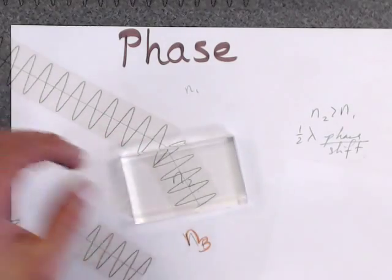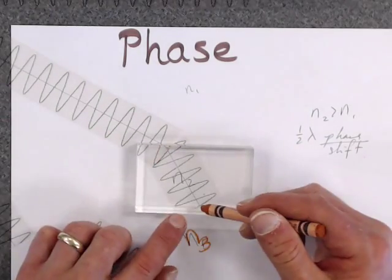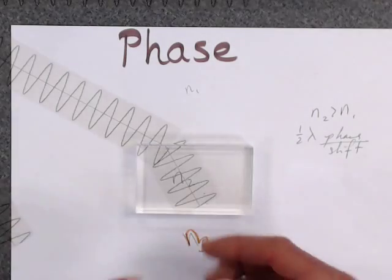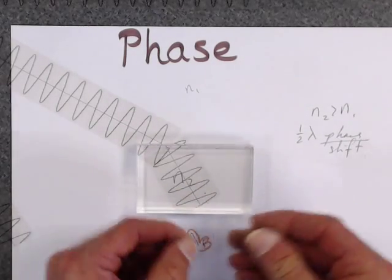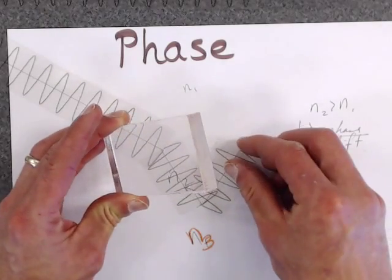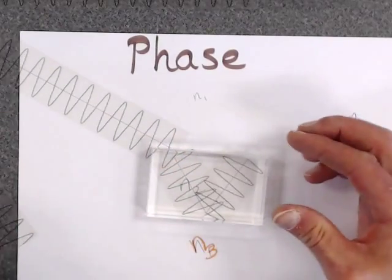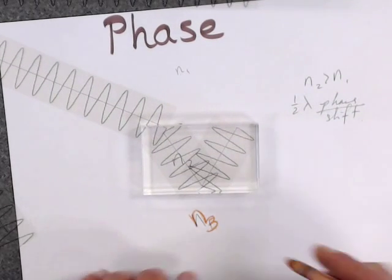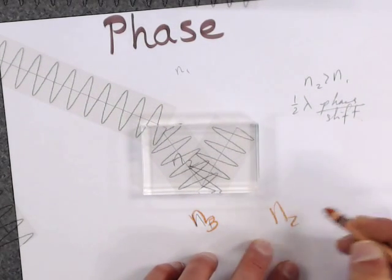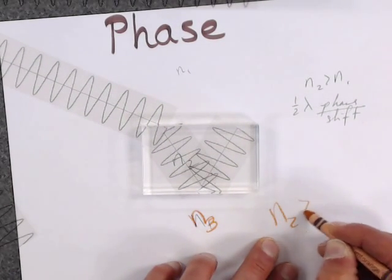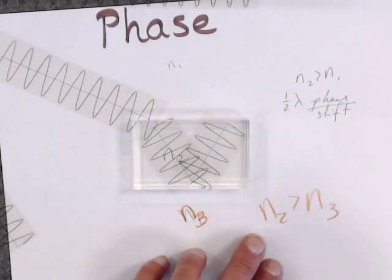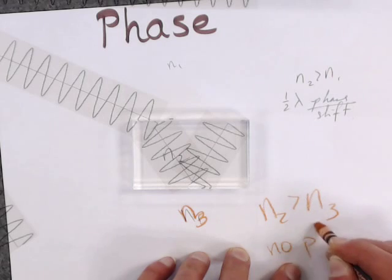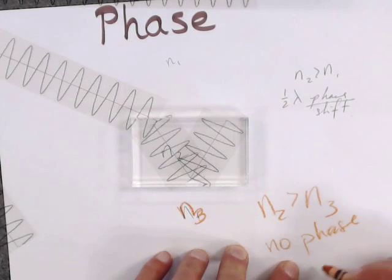So here when I have this internal reflection bouncing off there, it should be crest, trough, crest. I'm ready for a trough, and that's exactly what I get. So when N2 is greater than N3, there's no phase change.